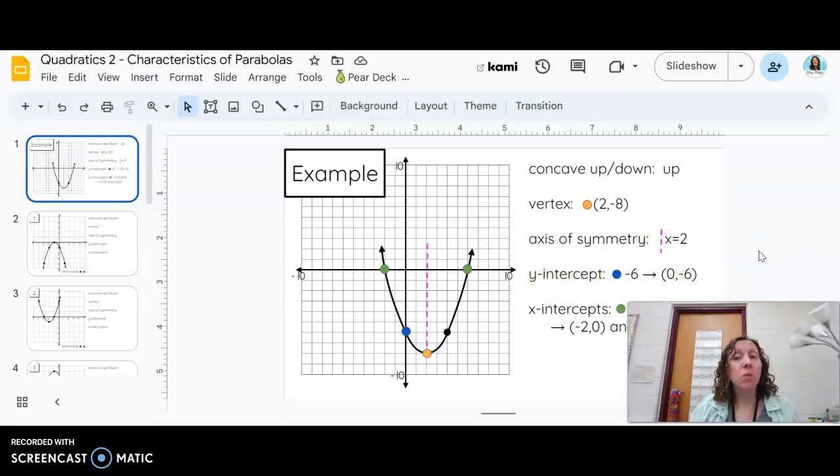Y-intercept is where the parabola crosses the y-axis. So for this one along the y-axis, this blue point is where the parabola crosses the y-axis. So that's our y-intercept. It's down here at negative six, and the coordinates of that point would be zero, negative six.